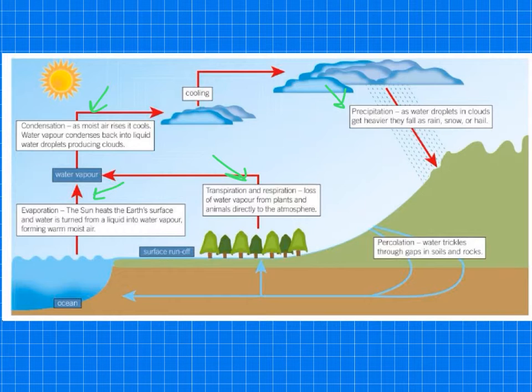So to summarize, the water cycle provides fresh water for plants and animals on land before draining into the seas. Water is continuously evaporated and precipitated, and that is the water cycle.